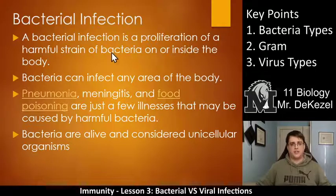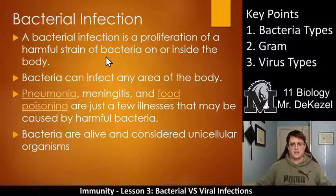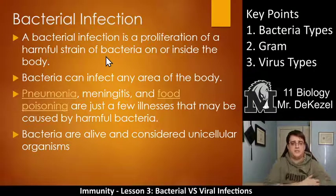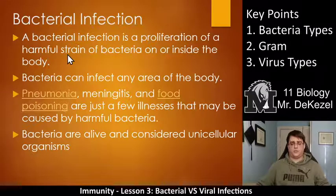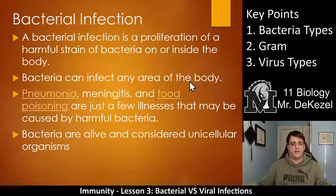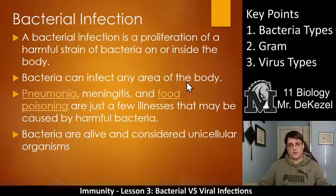A key point here is that a bacterial infection is the proliferation of a harmful strain of bacteria on or inside the body. This bacteria can proliferate on its own — it can proliferate in a puddle, on a piece of metal. It doesn't need to only proliferate inside of a human. The bacteria can infect any part of the body.